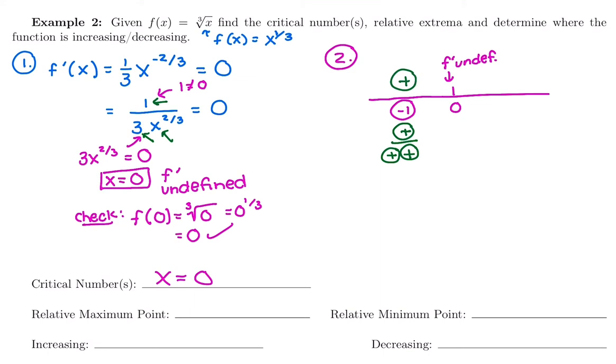The derivative is positive, which means the original function is increasing. After 0, you can plug in any test value that you want. We're going to plug into the derivative again. So I'm going to choose any number to the right of 0. Maybe I'll choose 1.